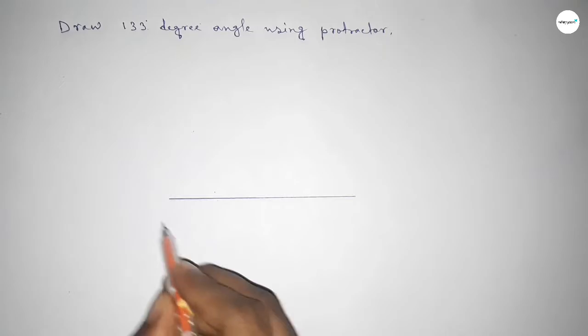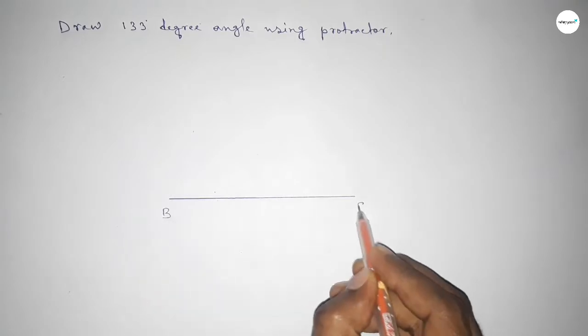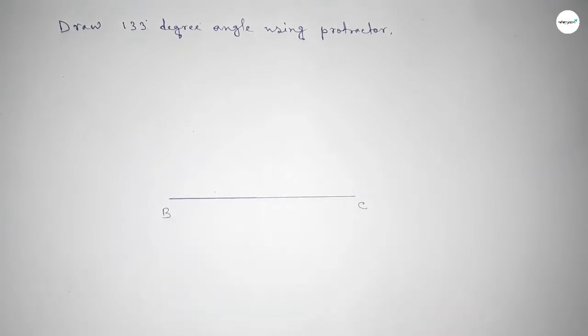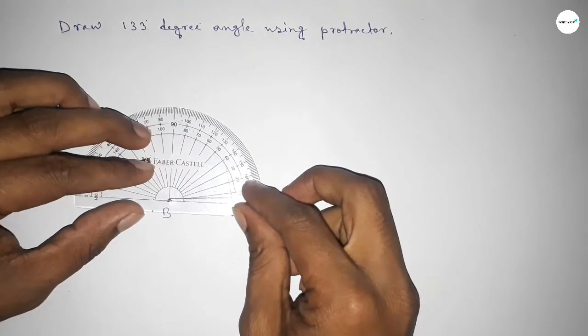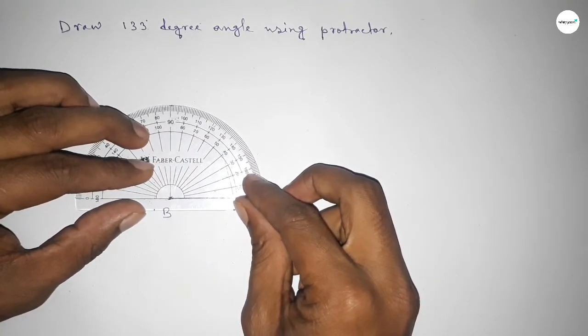Next, taking here point B and here C. Now putting the protractor on the point B perfectly, then counting the angles.